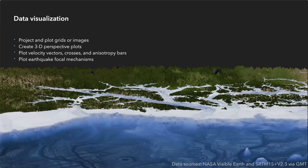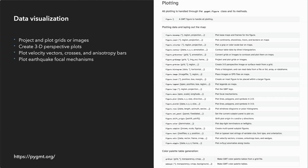PyGMT's data visualization capabilities are accessed through its figure class, which provides methods for projecting and plotting grids and images, creating 3D perspective plots, plotting velocity vectors, plotting earthquake focal mechanisms, and much more. All of PyGMT's data visualization methods are also fully documented at pygmt.org.